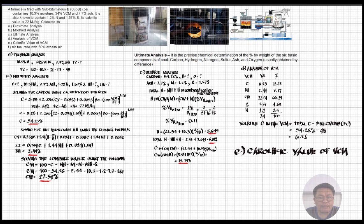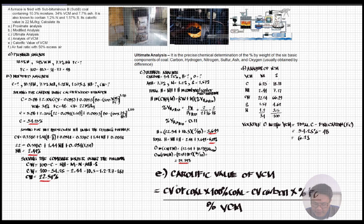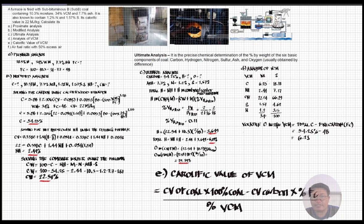For letter E, we need to determine the calorific value of the BCM. The equation is: calorific value of BCM equals the calorific value of coal times 100 percent of coal, minus the calorific value of carbon times the percentage of fixed carbon, all divided by the percentage of volatile combustible material. The BCM percentage total is 34, and the calorific value of coal is already given as 22.22 megajoules per kilogram.